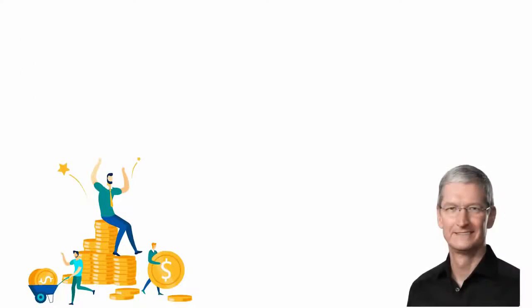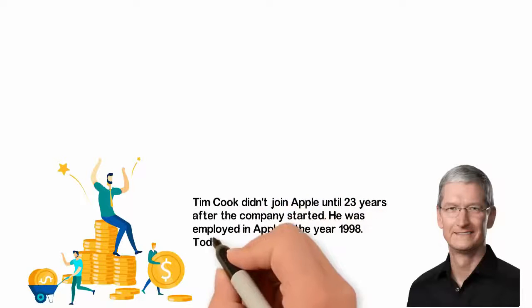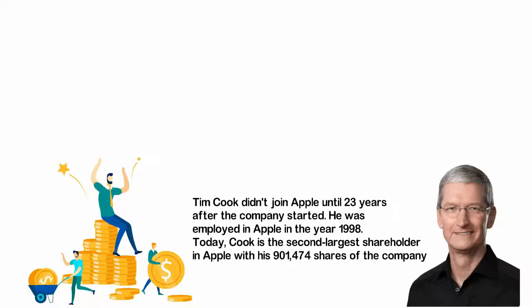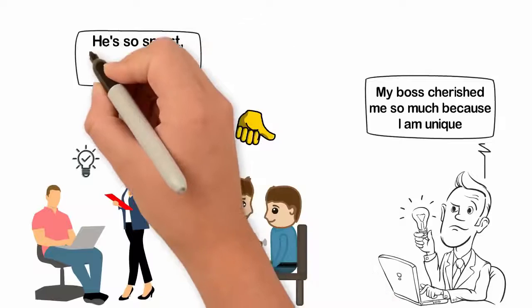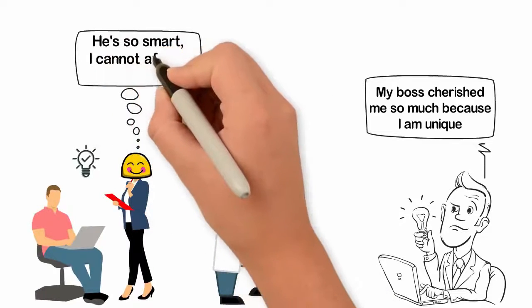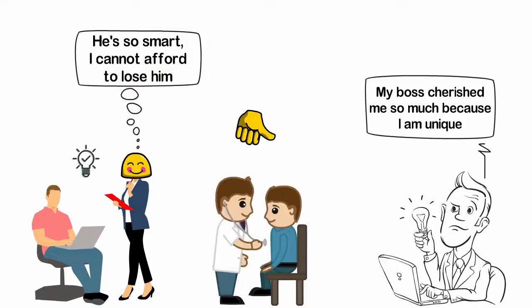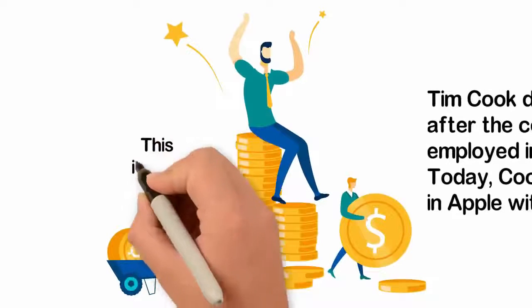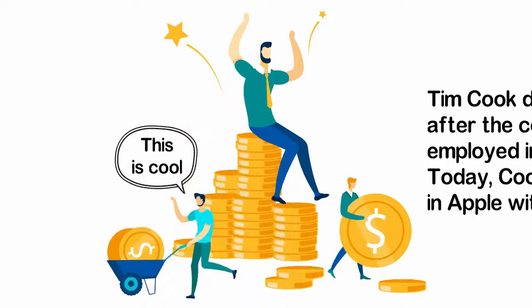Tim Cook didn't join Apple until 23 years after the company started. He was employed in Apple in the year 1998. Today, Cook is the second largest shareholder in Apple with his 901,474 shares of the company. So essentially, one way to get great leverage as an employee is to become so valuable for the company that employs you, so much that you become one of the owners of the company. Don't be scared by the images of Cook and Ballmer. Nobody needs to be them because nobody needs billions of dollars to become rich. All you need may be 3% of a company.